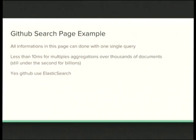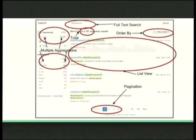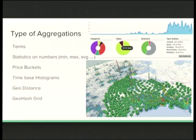If you look at GitHub's search page, it's fairly complex — you have facets on the left, a total count, full-text search, a list of results with star counts, and pagination at the bottom. This entire page can be done with one query in Elasticsearch. In our use case it takes around 10 milliseconds to return a page that complex. And yes, this page is powered by Elasticsearch on GitHub. You have two different aggregations at the same time — repository and languages — plus order by, total results, list view, and pagination.